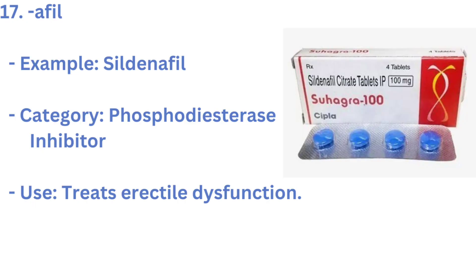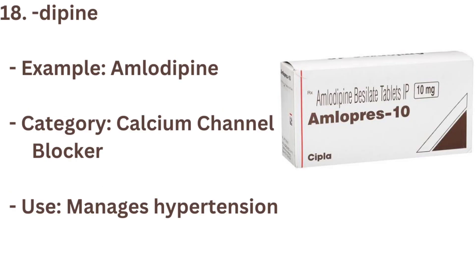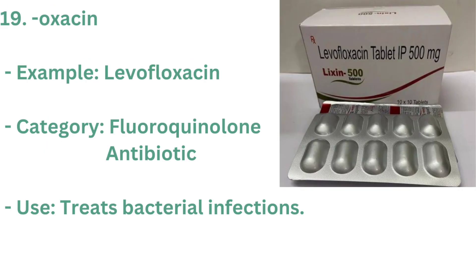17. AFIL — Example: SILDENAFIL. Category: PHOSPHODIESTERASE INHIBITOR. Use: TREATS ERECTILE DYSFUNCTION. 18. DIPINE — Example: AMLODIPINE. Category: CALCIUM CHANNEL BLOCKER. Use: MANAGES HYPERTENSION AND ANGINA.